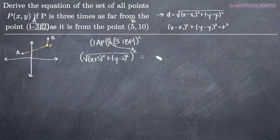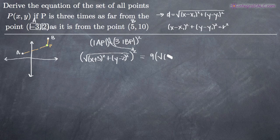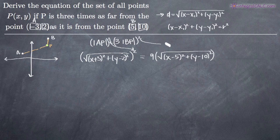Over on the right-hand side, we've got the three and the distance between B and P both squared. We'll square the three and get nine, then we'll have the distance formula representing the distance between B and P squared. Just like the distance between A and P, we'll have x minus five squared plus y minus ten squared, take the square root of that, and this whole thing is squared.